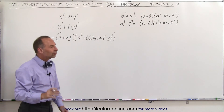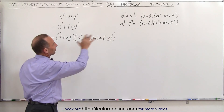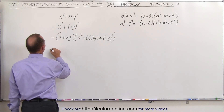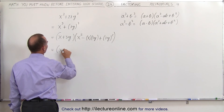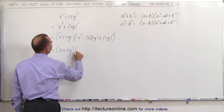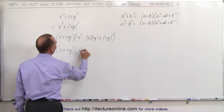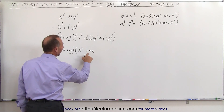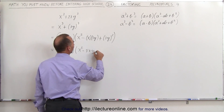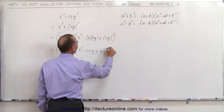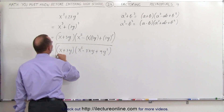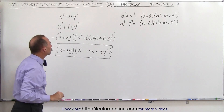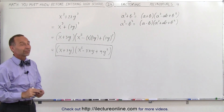I wrote it like this so you can see that the equation form is exactly the same. Now we simplify this, and it can be written as the quantity x plus 3y times x squared minus 3xy, writing the number before x and y, and then plus 9y squared. And this is what we call the factored form of the sum of these two cubes. And that's how it's done.